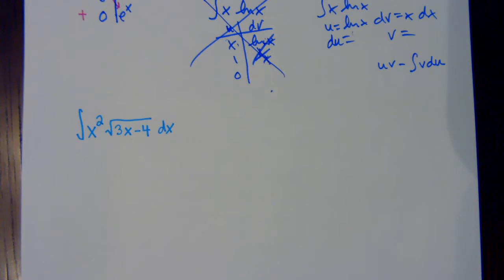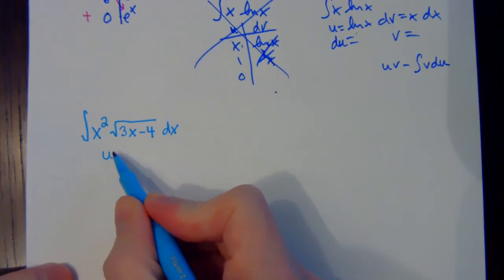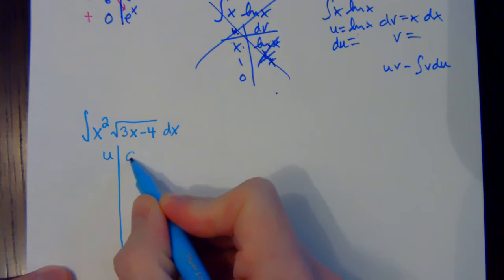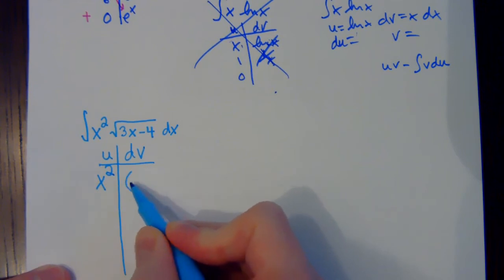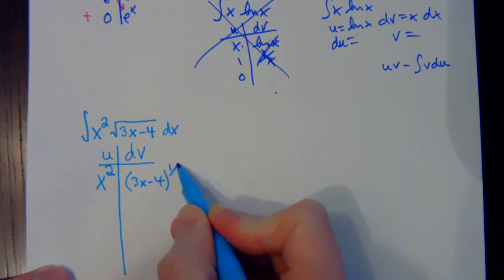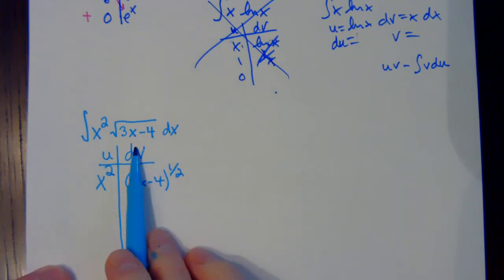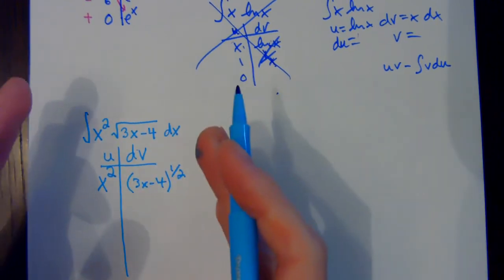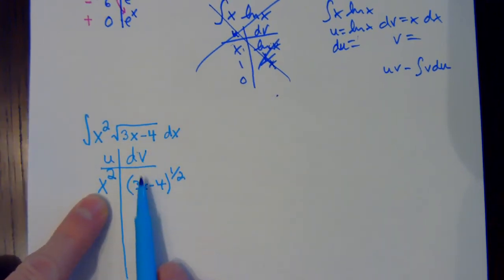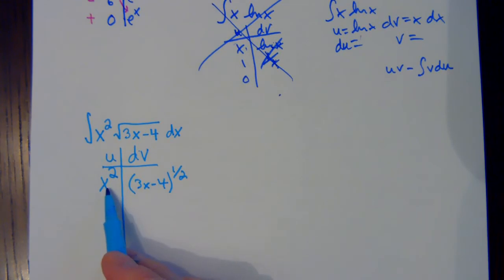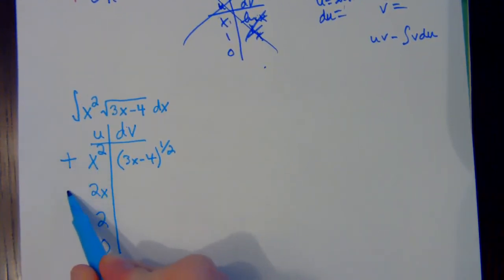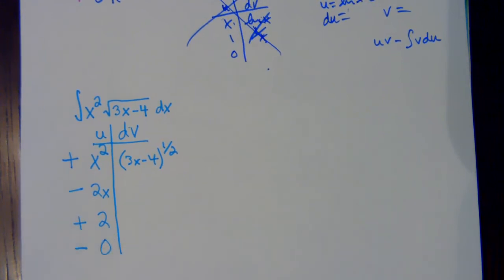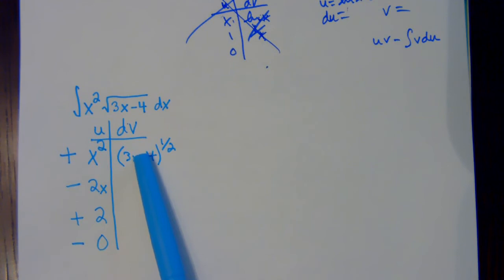I'm going to try this problem with the shortcut, so I'll make a little table with a u part and a dv part. I'm going to let the u be x squared and the dv be (3x minus 4) to the one half. Then I take the derivative down to zero: 2x, then 2, then zero. I'll do my signs — starting with a plus and alternating all the way down.